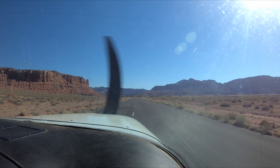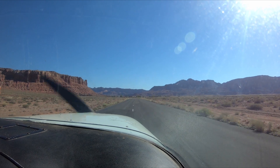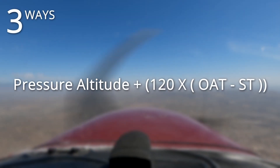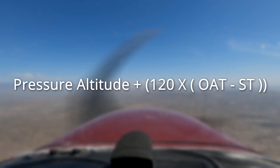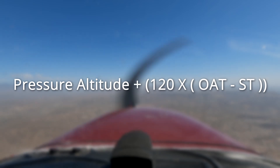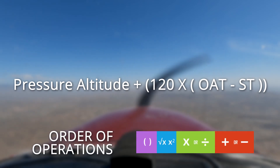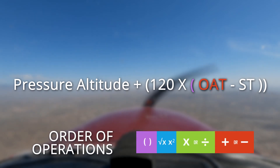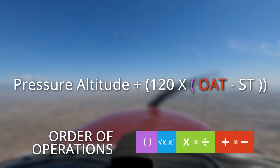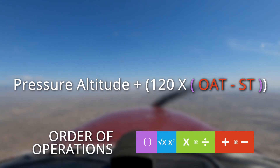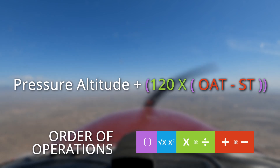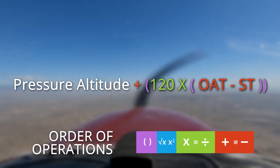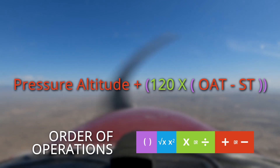So how would you calculate it? It's easier than you think with this simple equation. Using maths and the order of operations, we take outside air temperature and subtract the standard temperature, multiply that by 120, and then add the pressure altitude.